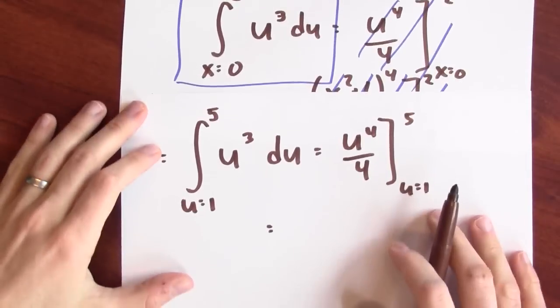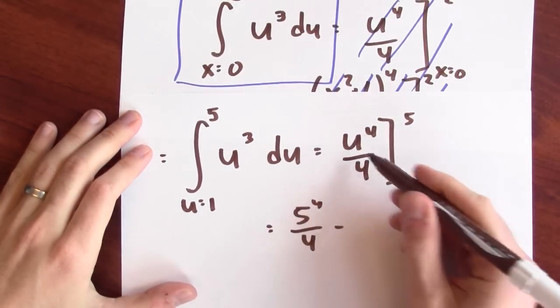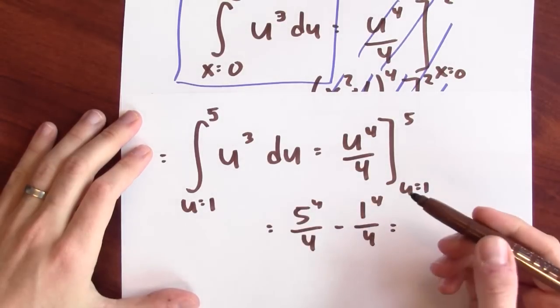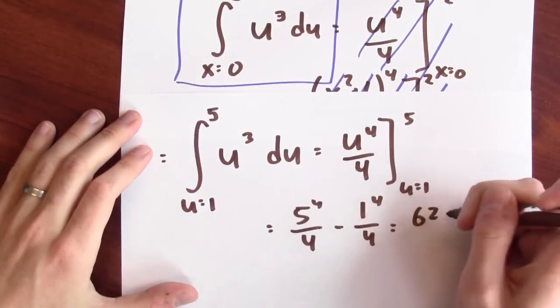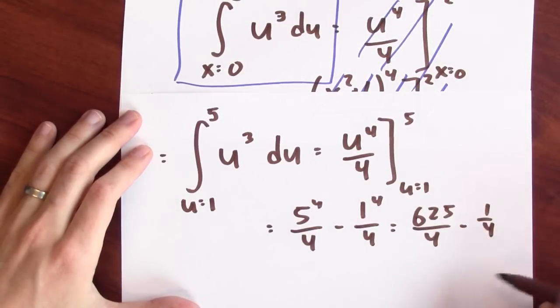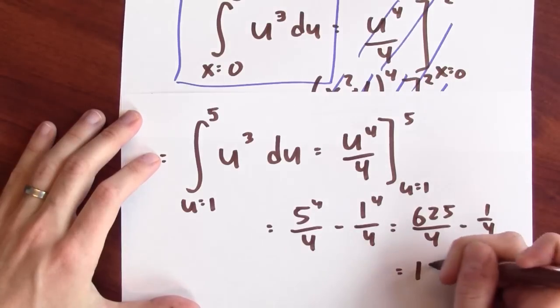When I plug in 5, I just get 5 to the fourth over 4. And when I plug in 1, I just get 1 to the fourth over 4. And 5 to the fourth is 25 squared, which is 625 over 4. And this is now the same as before, minus a quarter. And just like before, this ends up being 156.